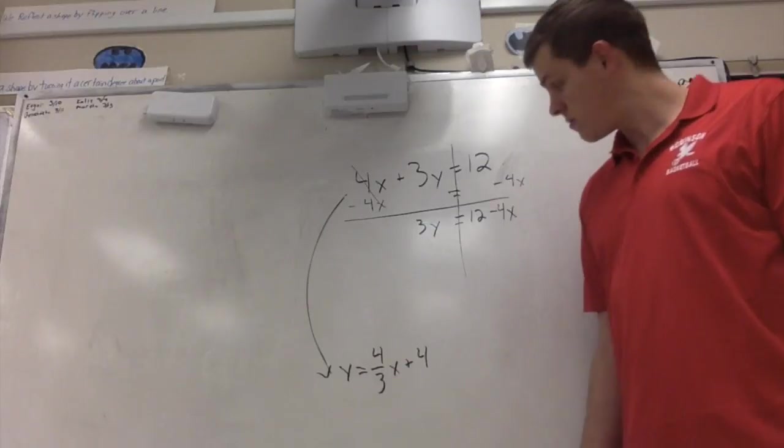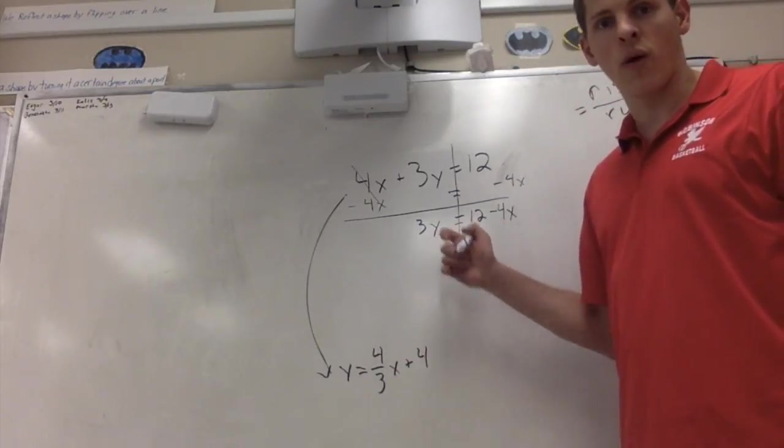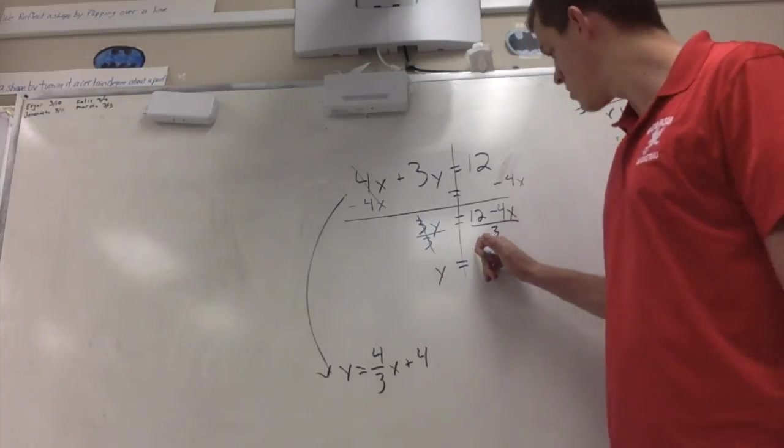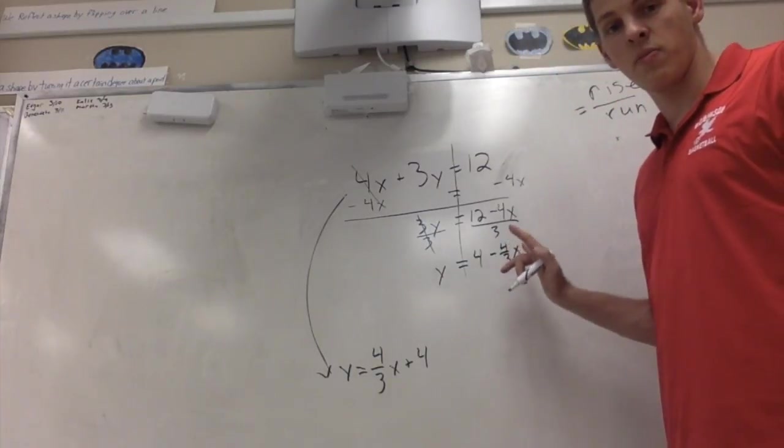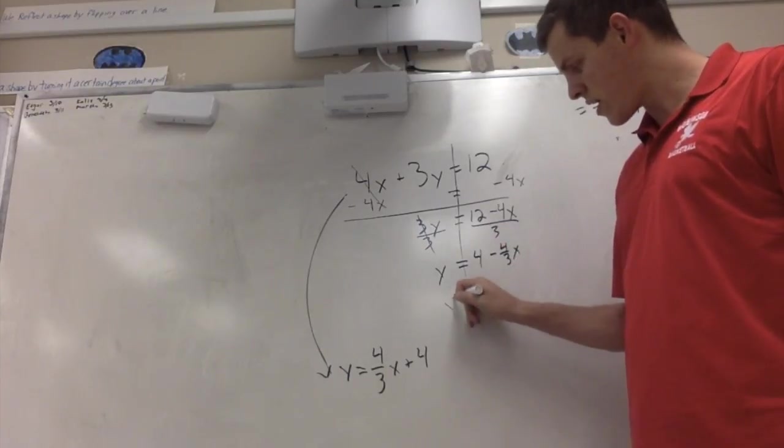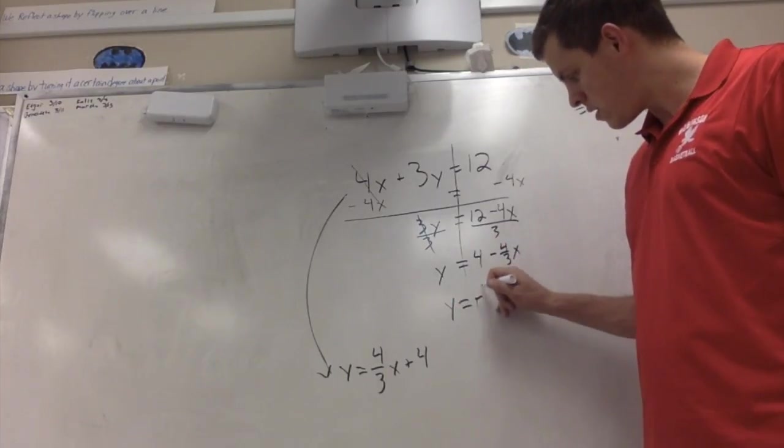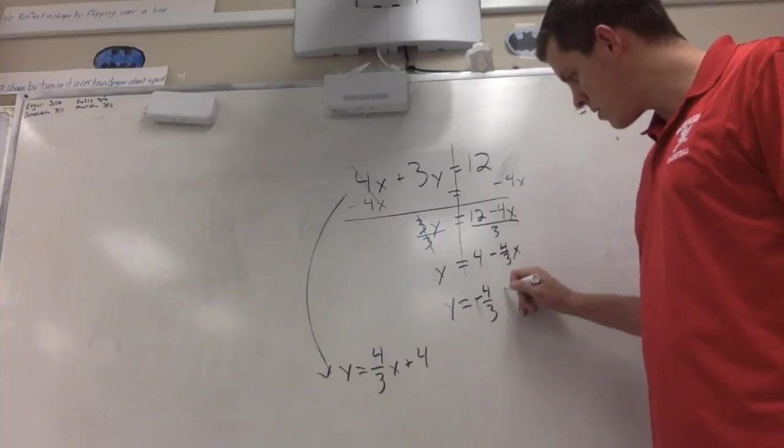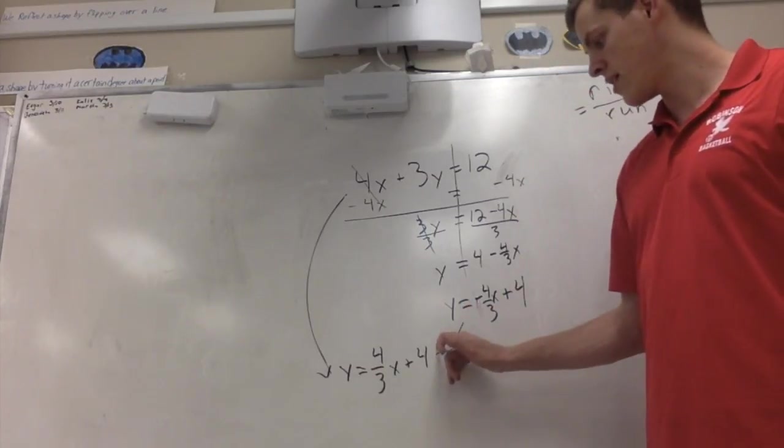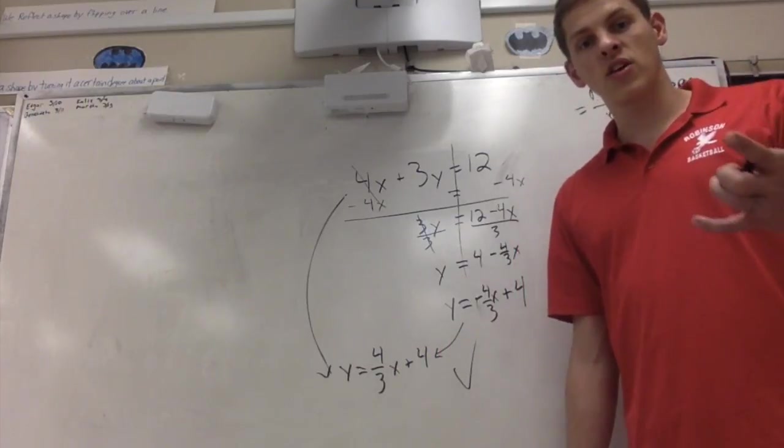All right, from there again, the only thing crowding y's space is that 3. And based on the fact that this is being multiplied, I can divide by 3. So that's y equals negative 4 over 3x plus 4, which is exactly that.